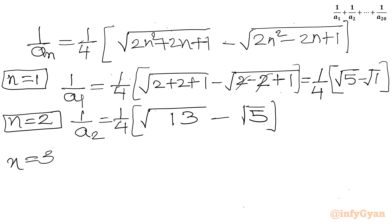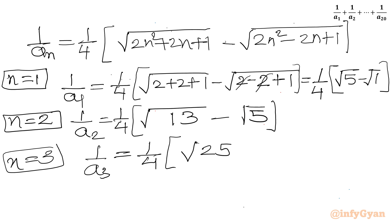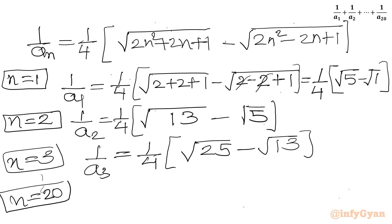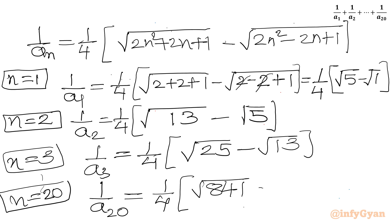Similarly, for n = 3: 1/a₃ = (1/4)[√25 − √13]. And for n = 20: 1/a₂₀ = (1/4)[√841 − √761].